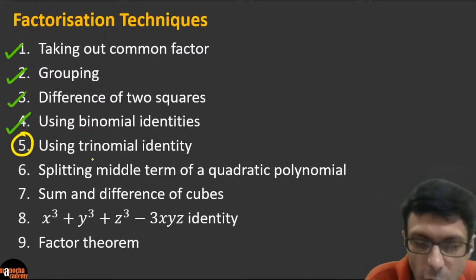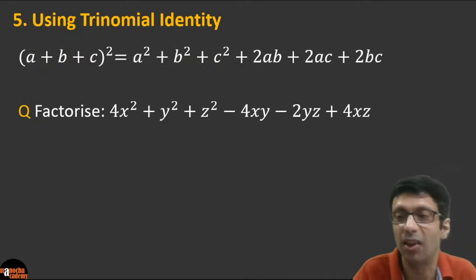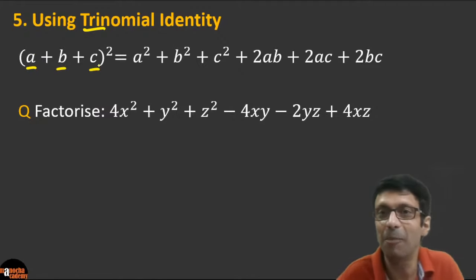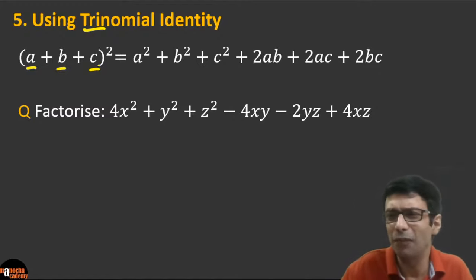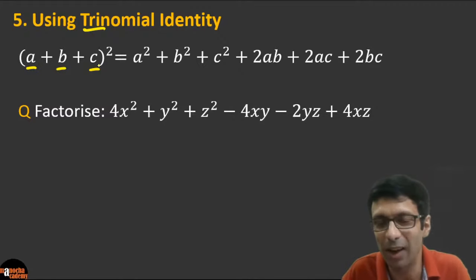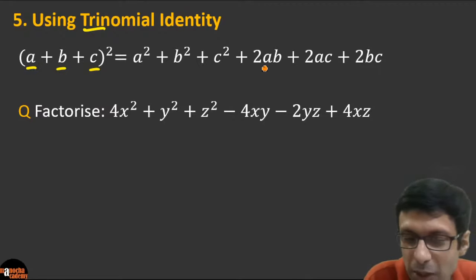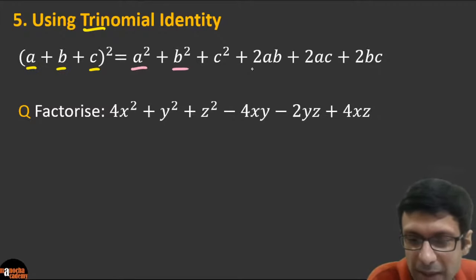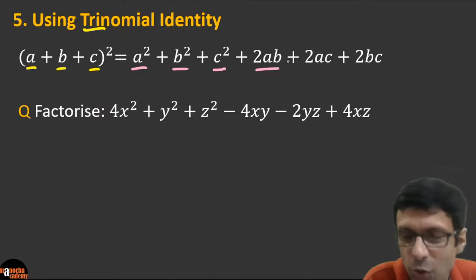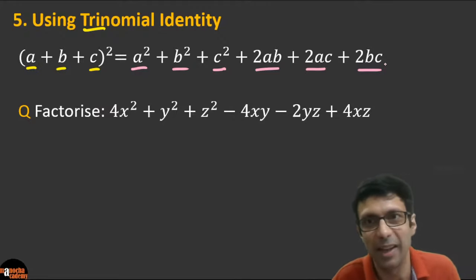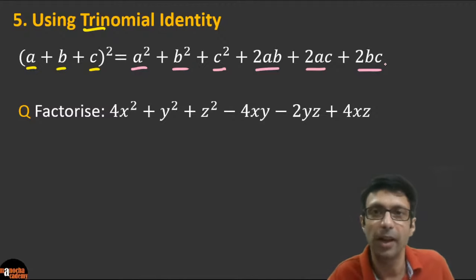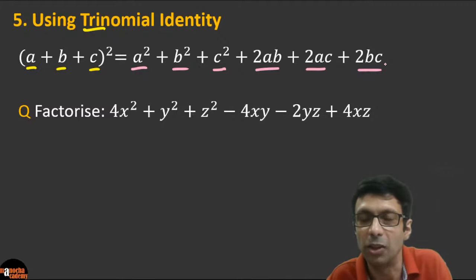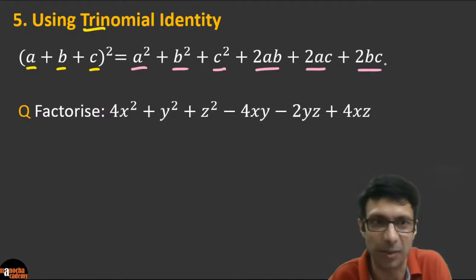Technique 5: Trinomial identity. From the name, there are three terms: a, b, and c. The identity is (a+b+c)² = a² + b² + c² + 2ab + 2ac + 2bc. This is similar to the binomial identity but with an extra term c. You can see this part (a² + b² + 2ab) is the same as before, but now there's plus c² plus 2ac plus 2bc.